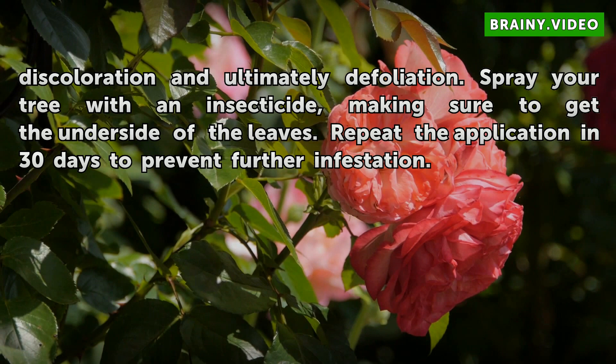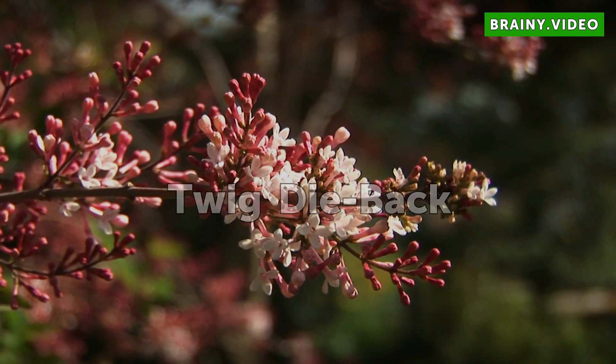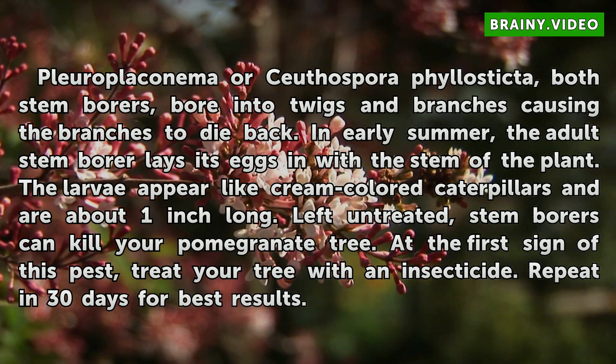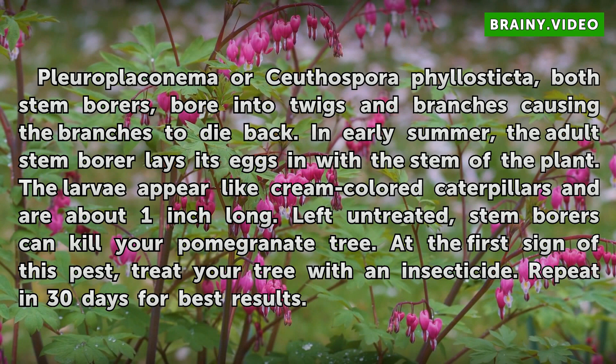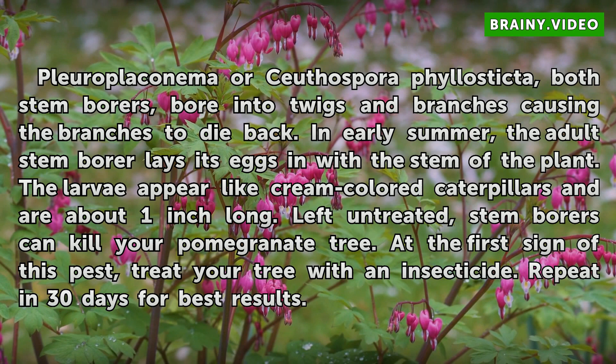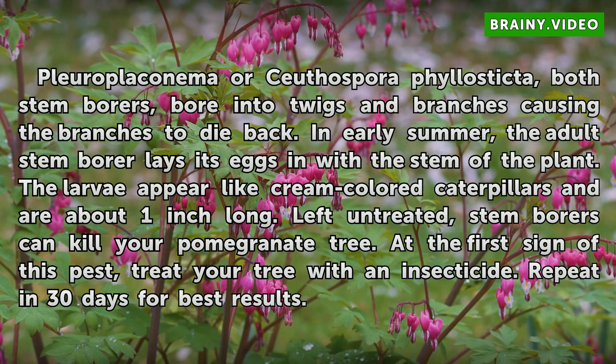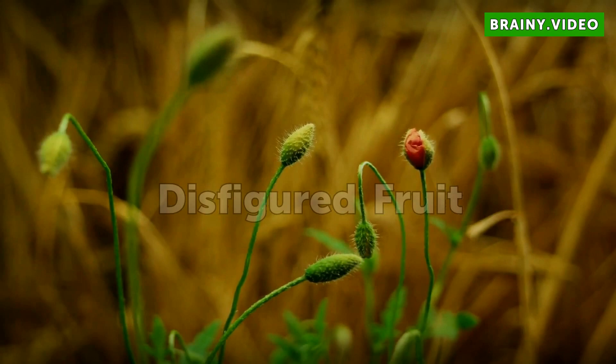Twig dieback. Pleurophoma or Soothyspora phyllosticta, both stem borers, bore into twigs and branches causing the branches to die back in early summer. The adult stem borer lays its eggs within the stem of the plant. The larvae appear like cream-colored caterpillars and are about one inch long. Left untreated, stem borers can kill your pomegranate tree. At the first sign of this, treat your tree with an insecticide and repeat in 30 days for best results.